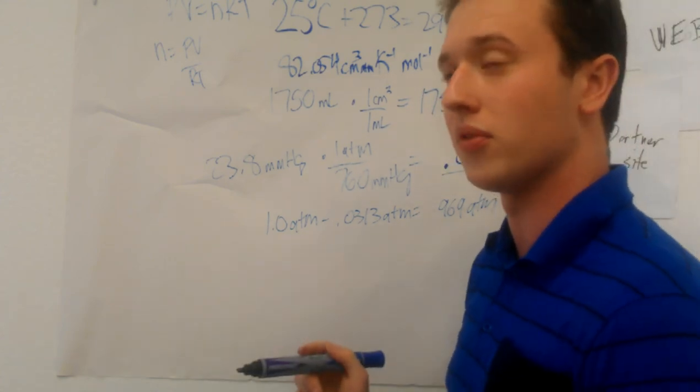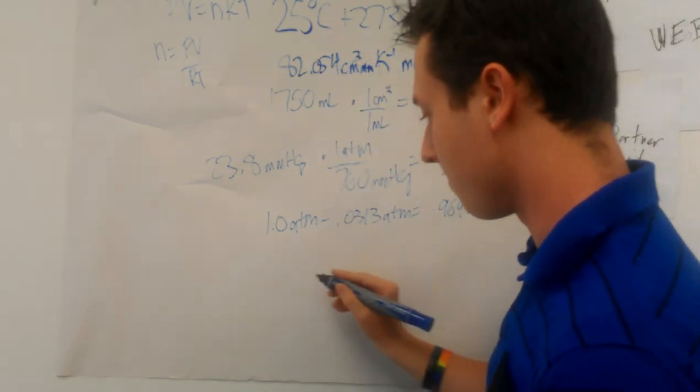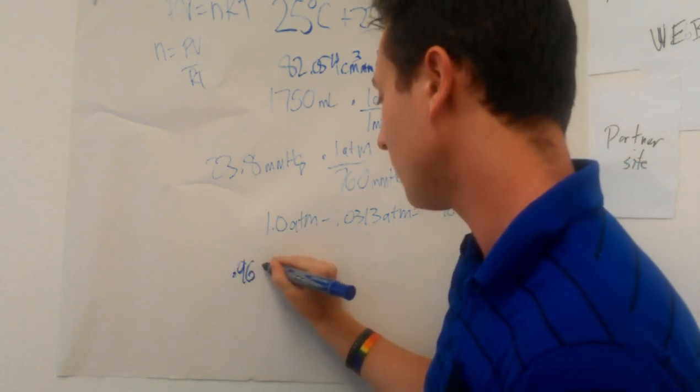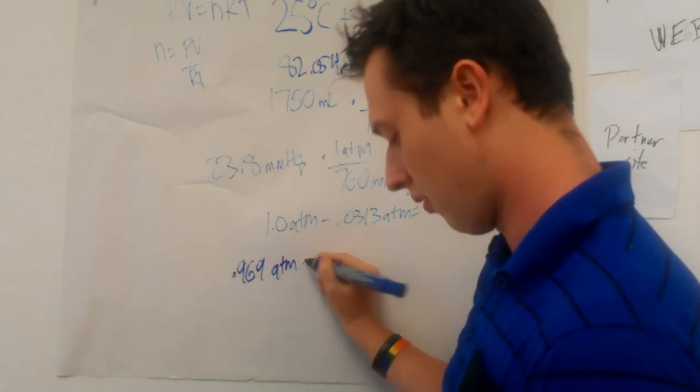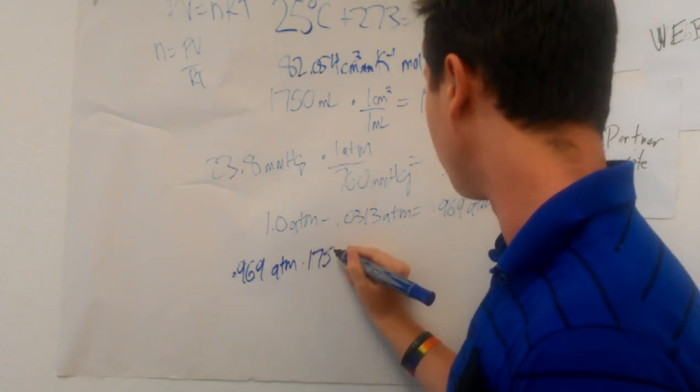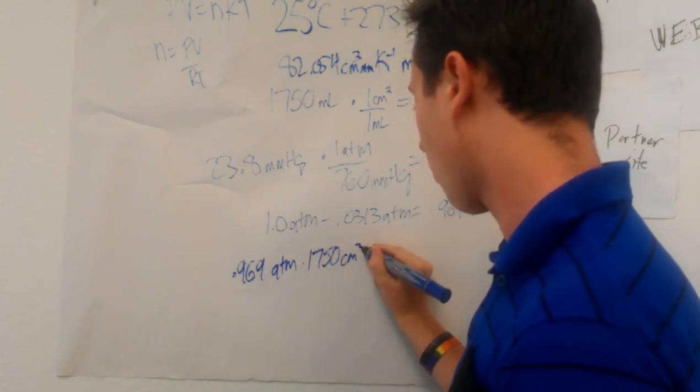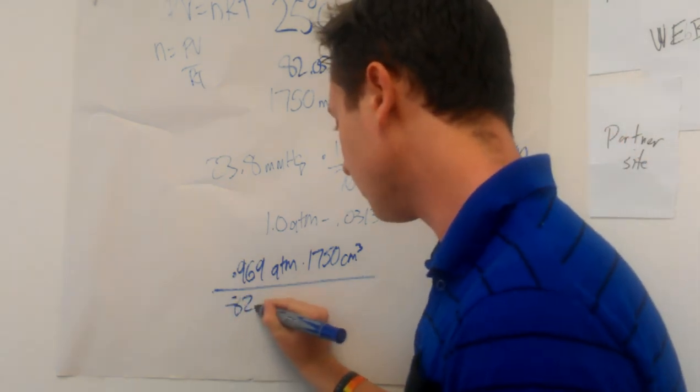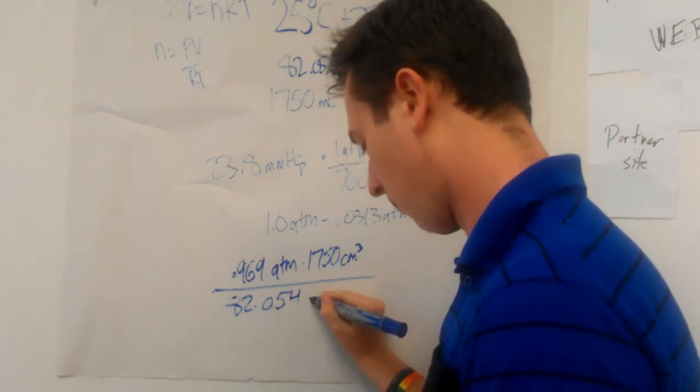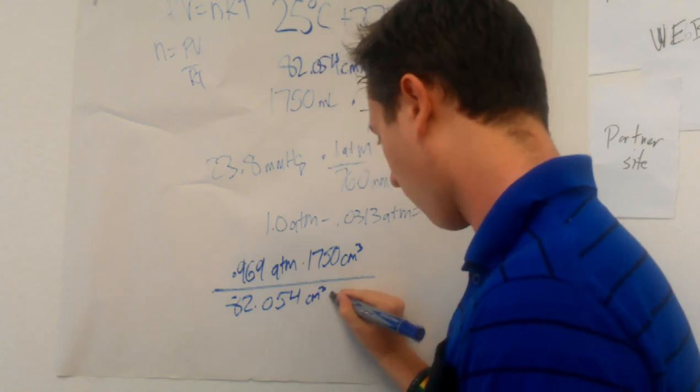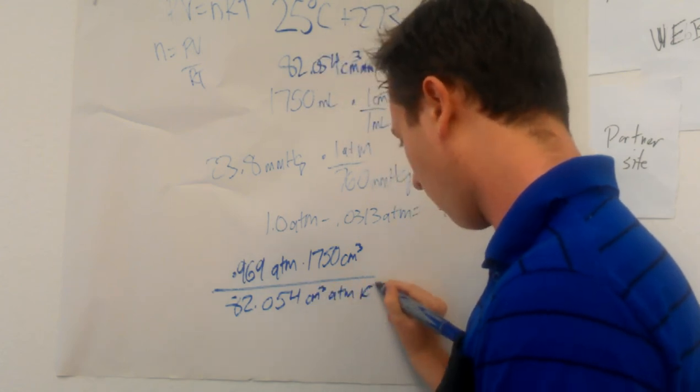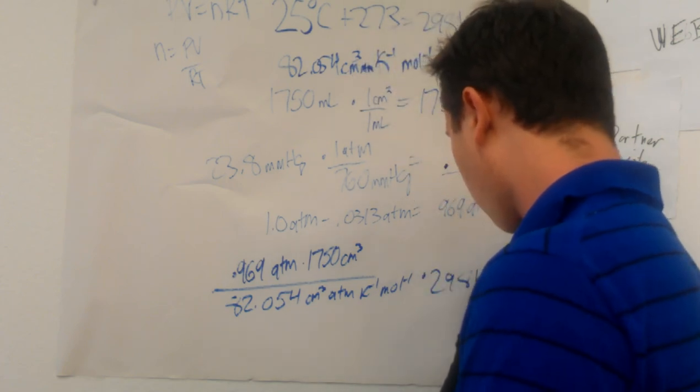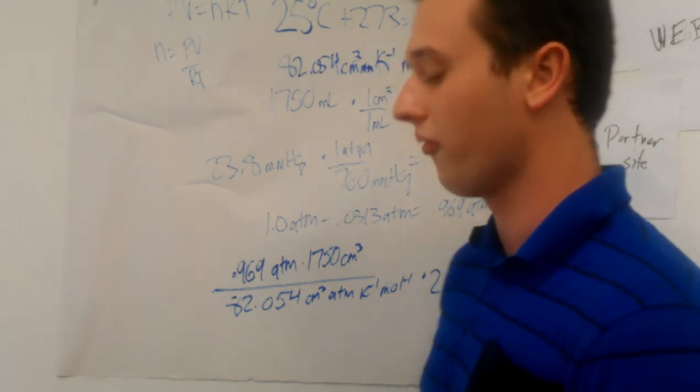All right, we've got all our variables. Let's just take them all and plug them in. So pressure, 0.969 atmospheres, times volume, 1,750 centimeters cubed, all over our R constant times our temperature is going to equal n, or our number of moles.